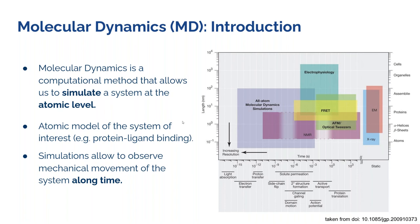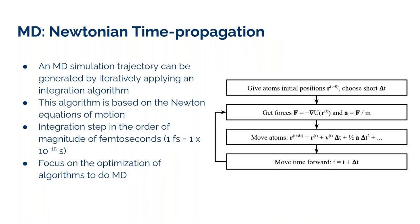So how does MD work? The basics are very simple: we have atomic positions — a given PDB structure, for example — and we move them across time using Newton's equations of motion. The MD algorithms are highly optimized for this. Each time step is on the order of femtoseconds — typically one, two, or even four femtoseconds — used to move our system across time.